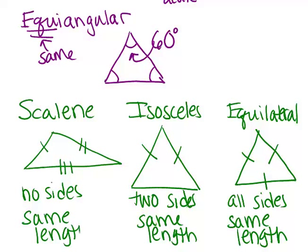So at this point, you should be able to classify any triangle two ways: based on its angles and based on its sides. For example, you could have an acute isosceles triangle or an obtuse scalene triangle. It just depends on what the angles and sides are in that particular triangle.